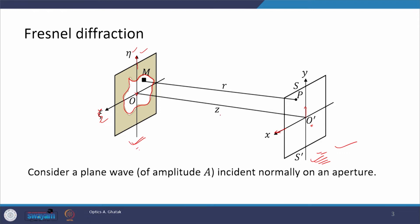The distance between O and O' is z. In the aperture plane we pick some differential area element designated by m, and the point of observation on the screen plane is p. The distance between the area element m and the point of observation p is small r. This aperture plane is illuminated by a plane wavefront from the left, and after the illumination the pattern is recorded on this screen.